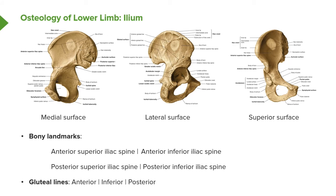Looking at the lateral surface of the ilium, it gives rise to attachments for gluteus maximus. To understand these attachments we need to know the gluteal lines: the anterior gluteal line, the inferior gluteal line running alongside the body of the ilium, and the posterior gluteal line running alongside the posterior iliac spines. These are important gluteal lines to be familiar with when looking at the attachment sites of the gluteal muscles.